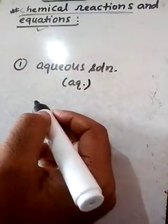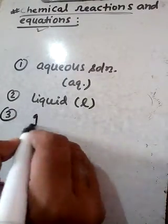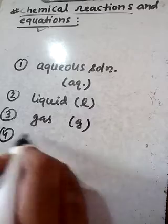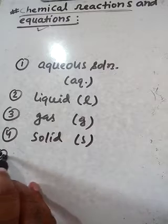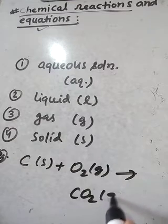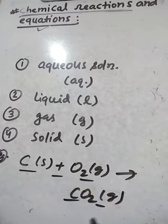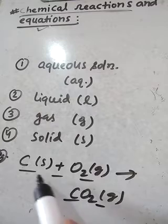A chemical reaction is made more informative by adding state symbols to the equation. For aqueous solution we write (aq), for liquid we write (l), for gas we write (g), and for solid we write (s). For example: C(s) + O2(g) → CO2(g). This tells us that carbon is in the solid state, oxygen is in the gaseous state, and carbon dioxide is also in the gaseous state.